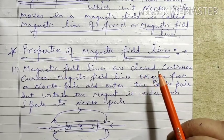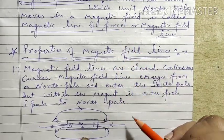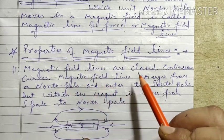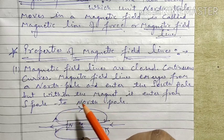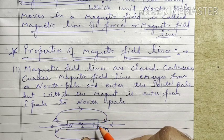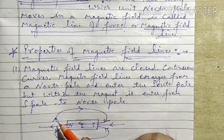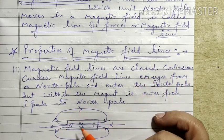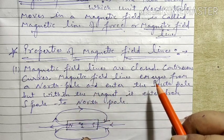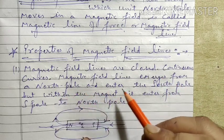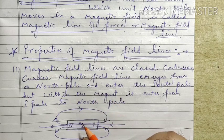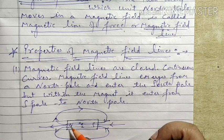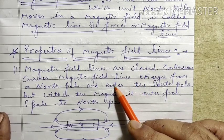अब हम करते हैं Properties of Magnetic Field Lines। First property: Magnetic field lines are closed continuous curves। ये lines north से निकल कर south में जाती हैं, और south से फिर north की तरफ अंदर से जाती हैं — इस तरह ये closed और continuous होती हैं। Magnetic field lines emerge from the north pole, enter the south pole, and within the magnet travel from south pole to north pole।